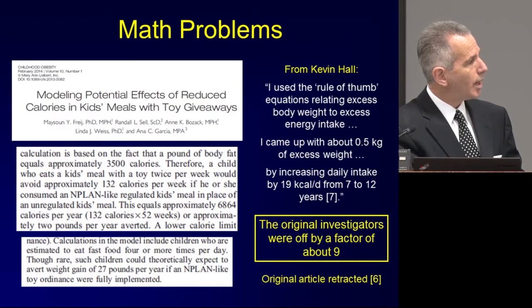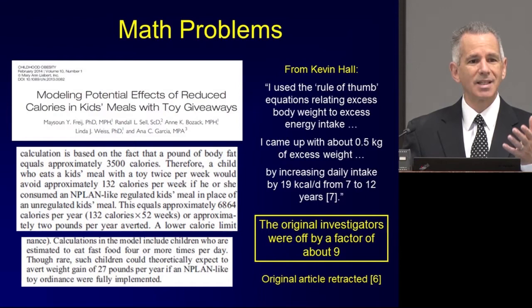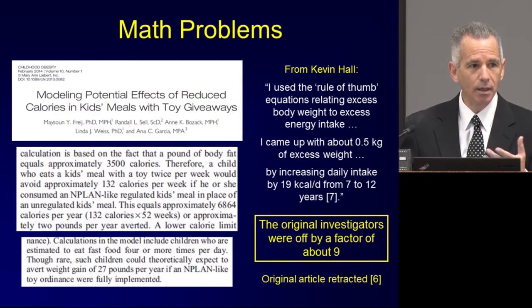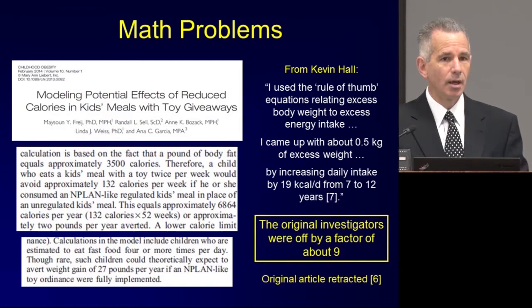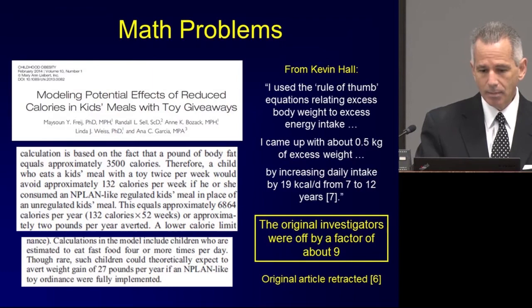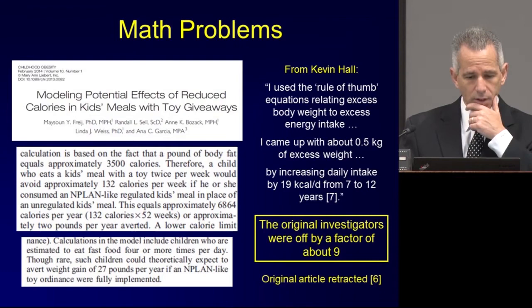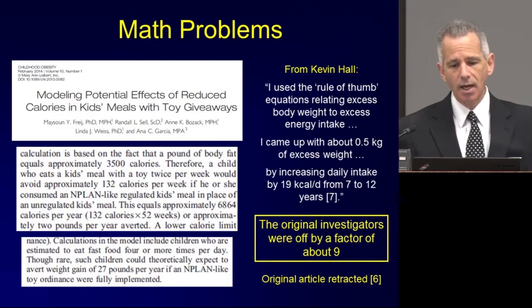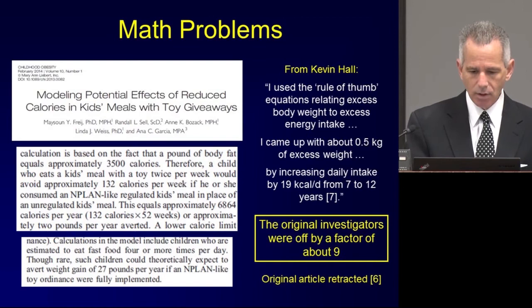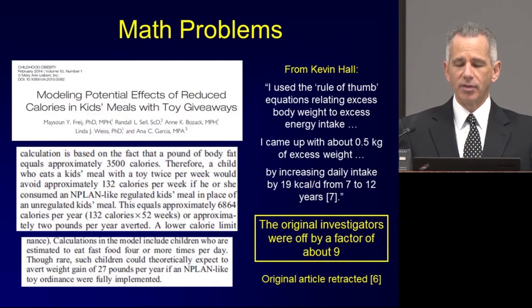Then I read further and saw that calculations in the model include children estimated to eat fast food four or more times per day — meaning 28 meals at a fast food restaurant per week. This seemed implausible. The paper went on to say they would avoid a weight gain of 27 pounds per year. I thought: how many kids even gain 27 pounds per year? Would a kid have negative growth? So I emailed Kevin, who has a well-validated model for predicting weight changes in children as a function of changes in energy intake or expenditure, and asked him to run the numbers. He sent back a message indicating the authors were off by at least an order of magnitude — and the further out in time you went, because it's a linear projection, the more off it became.